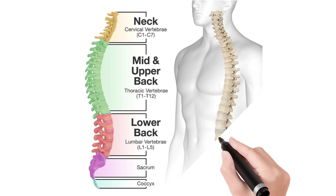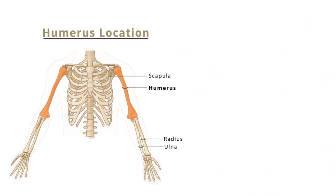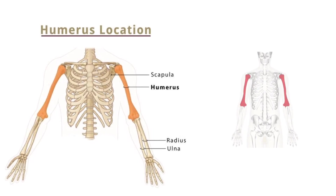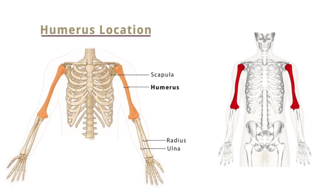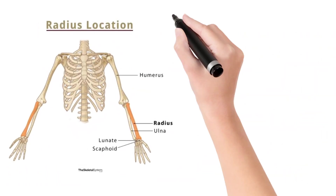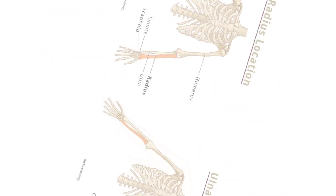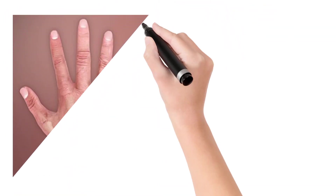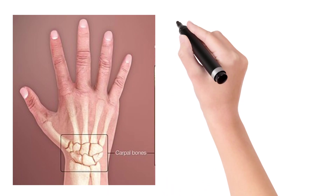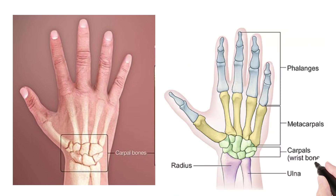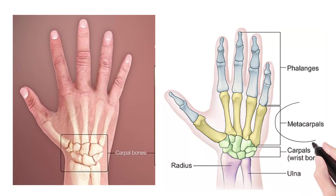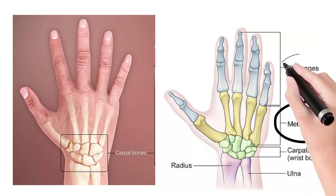In the back side there will be a vertebral column. Coming to the hands, the bone above the elbow is called the humerus, and below the elbow there are two bones called the radius as well as the ulna. In the hand there will be wrist bones called carpals, and hand bones called metacarpals.